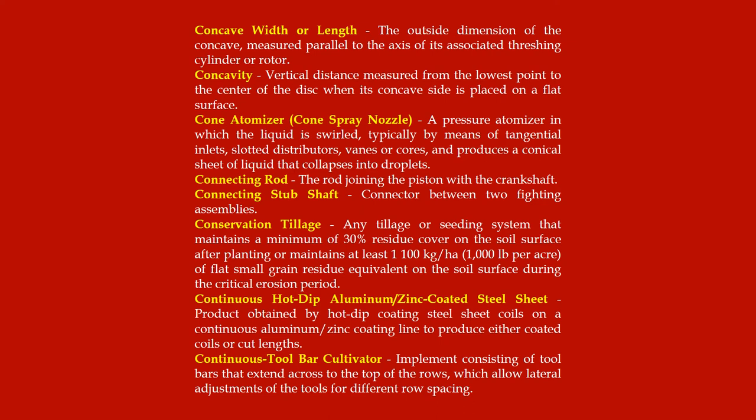Concavity: vertical distance measured from the lowest point to the center of the disc when its concave side is placed on a flat surface. Cone atomizer or cone spray nozzle: a pressure atomizer in which the liquid is swirled — typically by means of tangential inlets, slotted distributors, veins or cores — and produces a conical sheet of liquid that collapses into droplets.